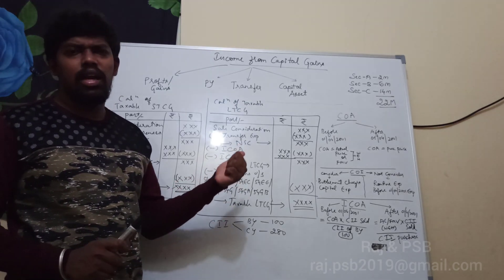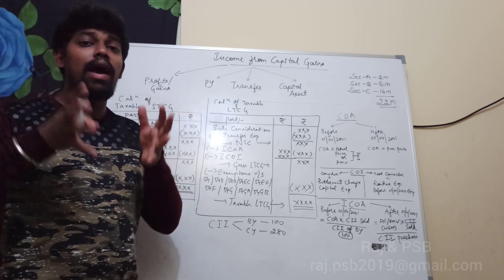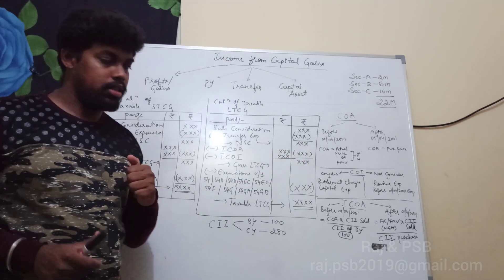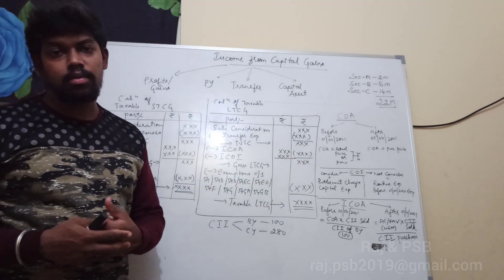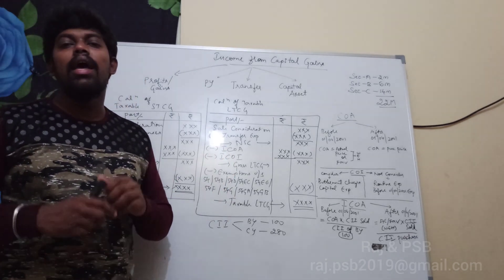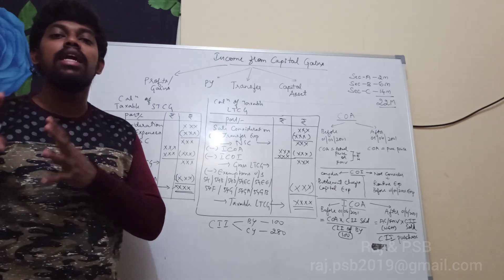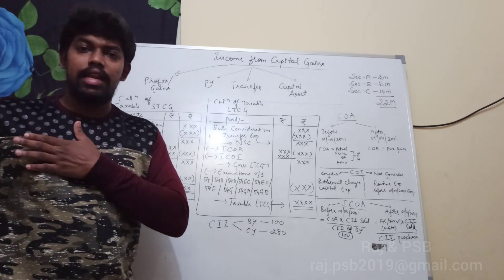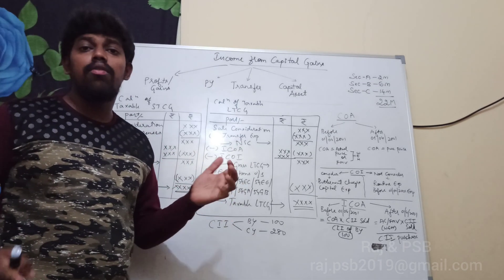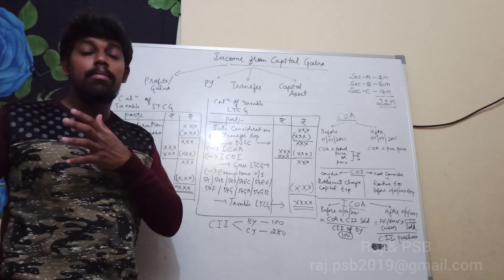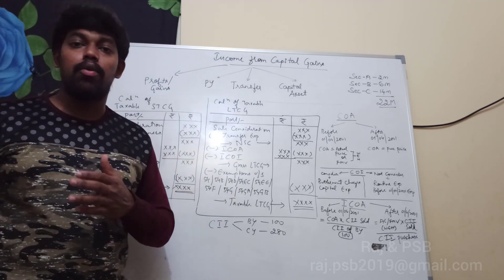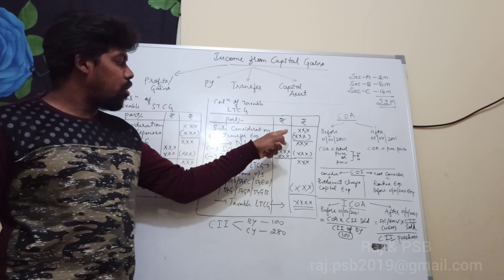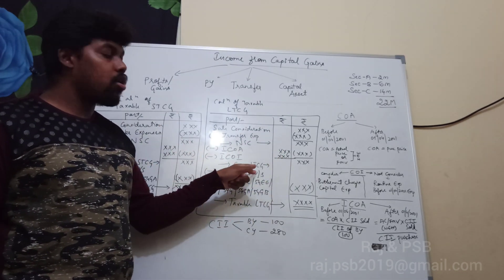The index cost of acquisition is essentially the purchase value adjusted for inflation — for example, the value from 10 years back brought to current terms. Similarly, the index cost of improvement is the amount expended to make improvements to an asset, also adjusted using the index. After deducting both, we arrive at the gross long-term capital gains.